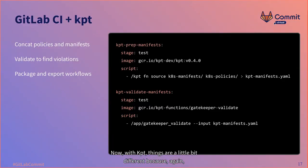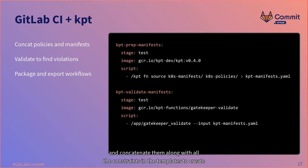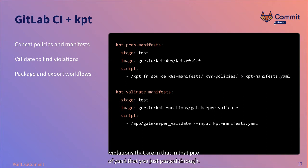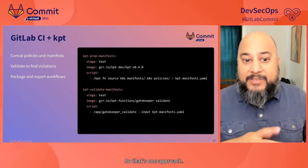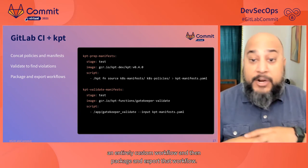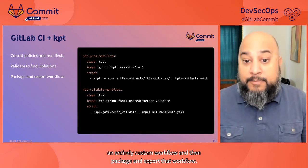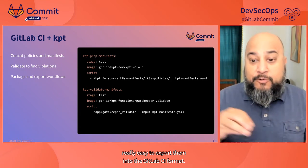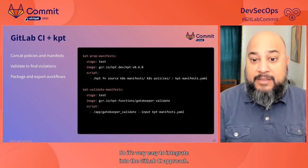With Kpt, things are a little bit different because it's more of a general purpose workflow tool. The first thing you'll do is take all the application manifests and concatenate them along with all the constraints and templates to create one giant pile of resource configuration. Then you take that whole pile and run it through the Gatekeeper validate Kpt function, which lets you find any policy violations in that pile of YAML. The other approach is to use Kpt to create an entirely custom workflow, package and export it — Kpt makes it really easy to export those custom workflows into the GitLab CI format, so it's very easy to integrate.